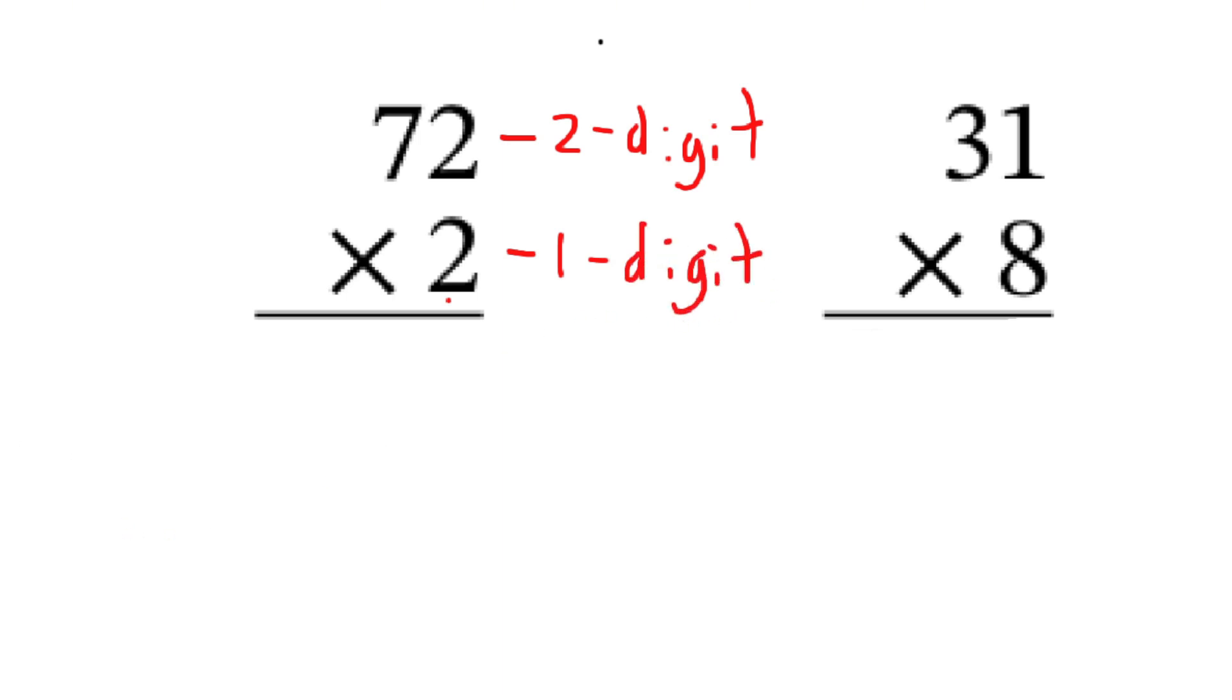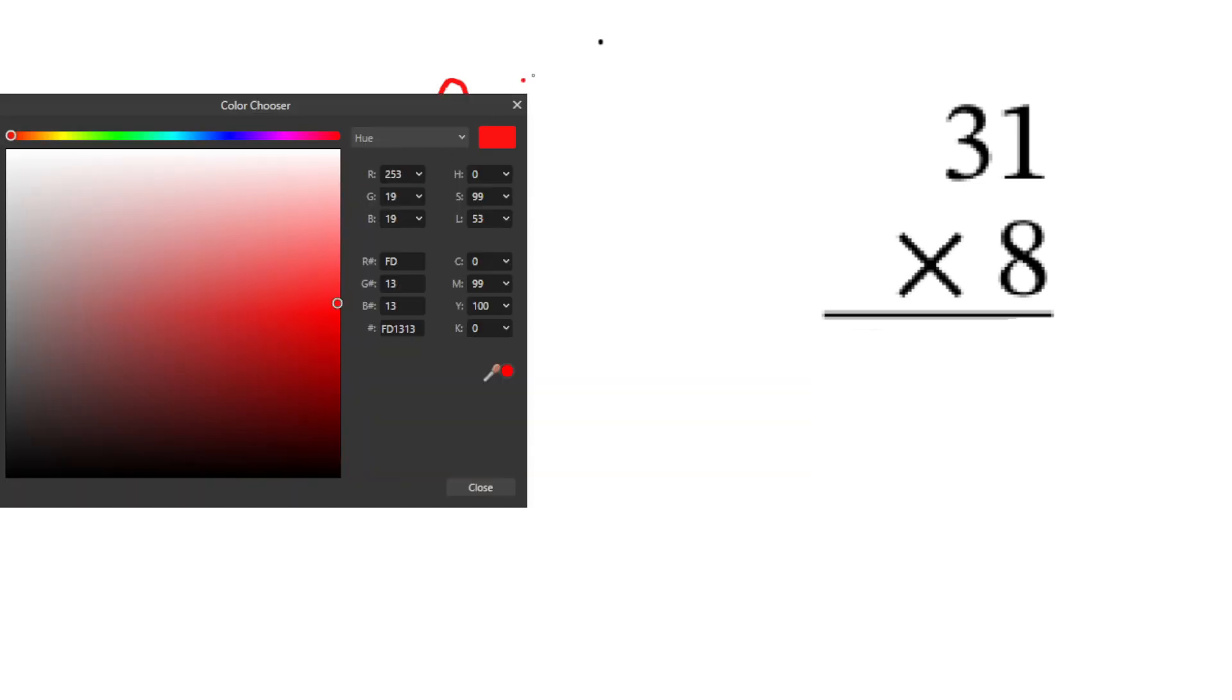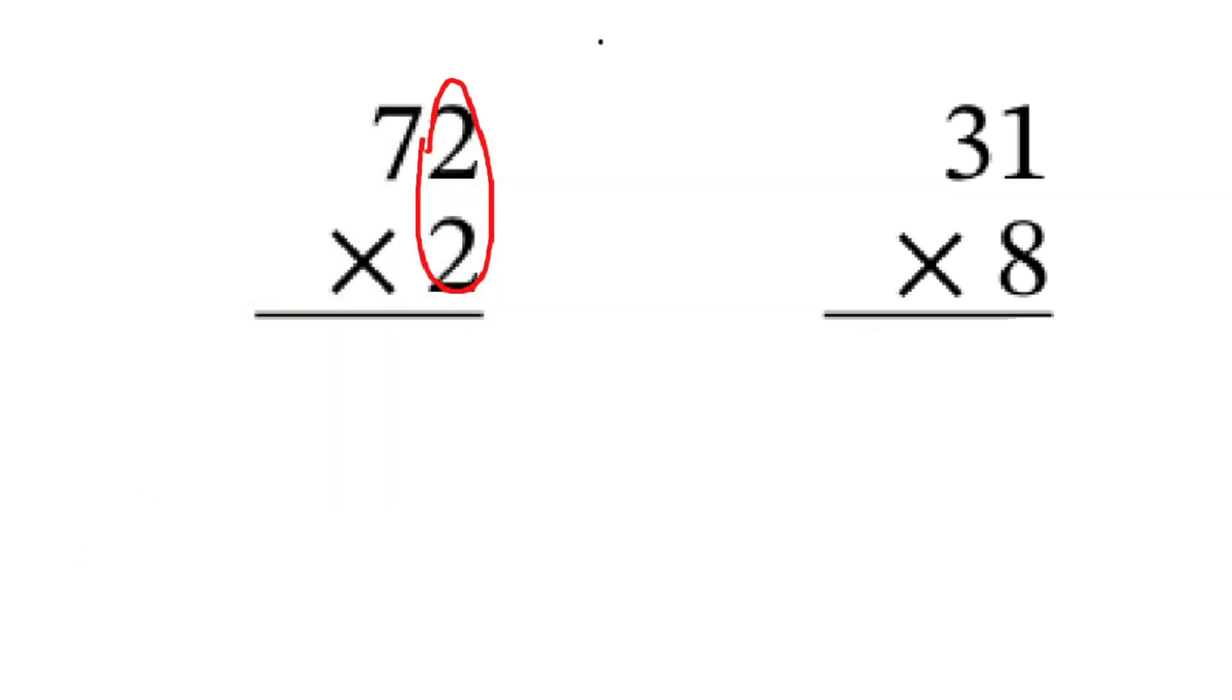Now, how do we go ahead and multiply these or figure this out? It's very simple, believe it or not. All you're doing right here is you're saying two times two. You don't think about the seven, ignore the seven. It's not relevant yet. It will be, but not yet. So the next thing we're going to do is simply do two times two, which is going to be equal to four. That's very simple.